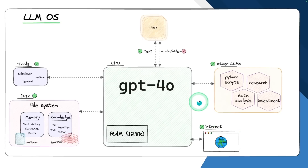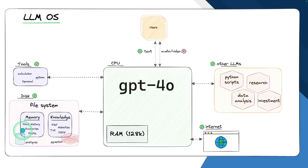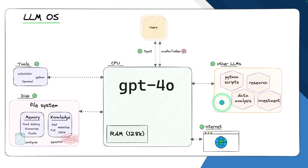We are going to modify this slightly, where we are going to use GPT-4O as the large language model. We are going to provide tools — calculator, Python terminal — other AI agents or multi-agents, provide internet access, and have the ability to store information in memory and knowledge. So when the user asks a question, the LLM OS is going to use all these available tools and then give a response to the user.